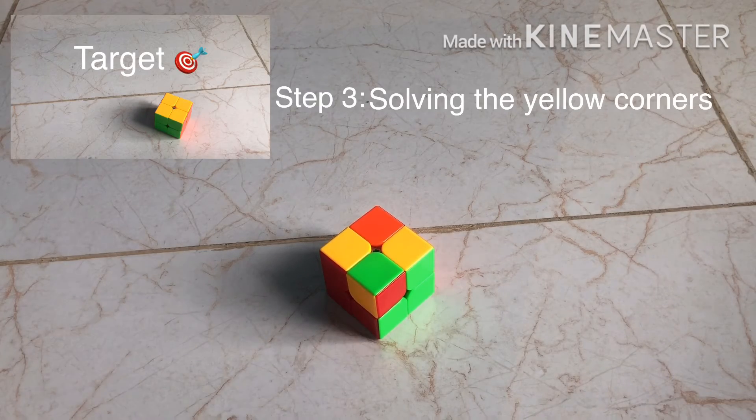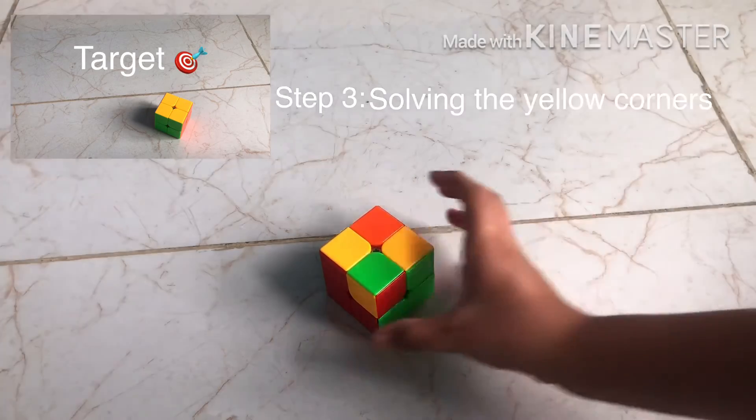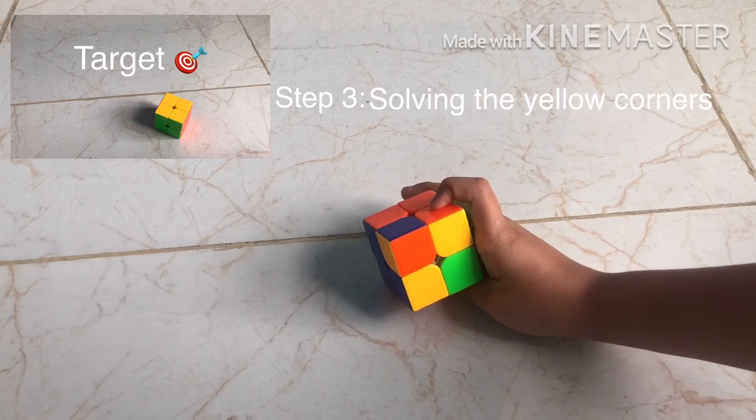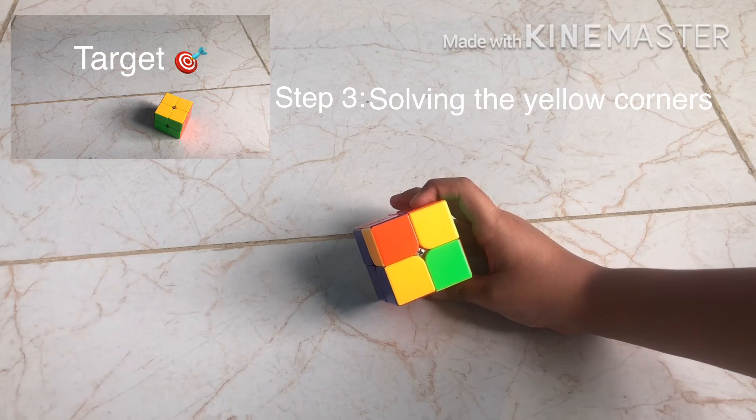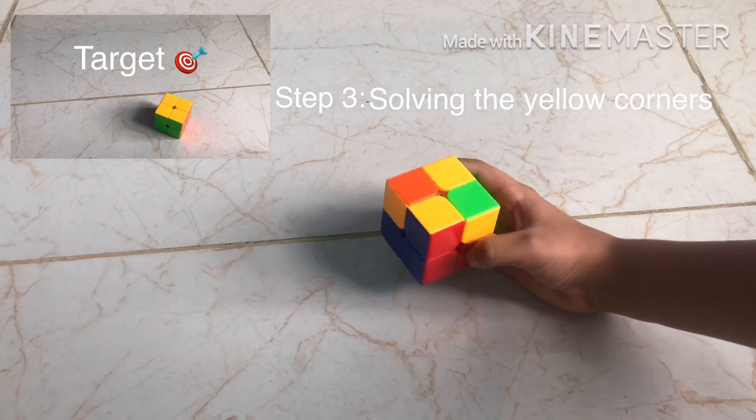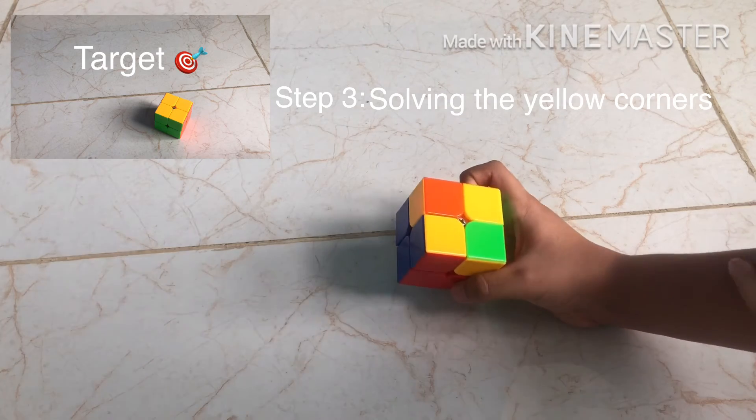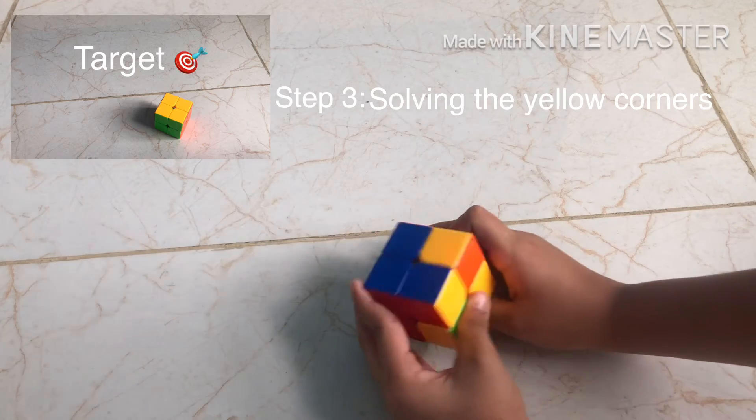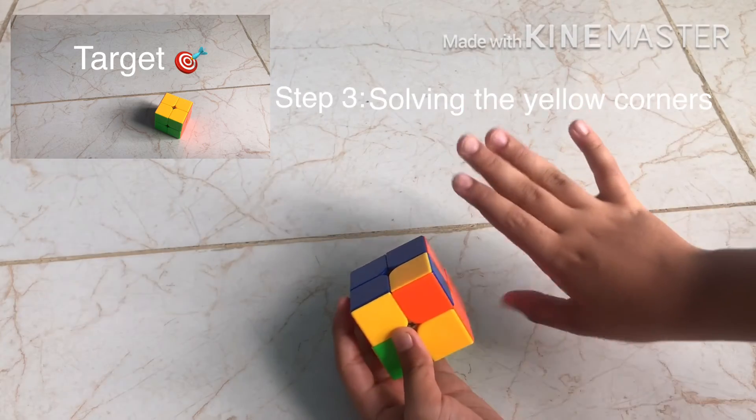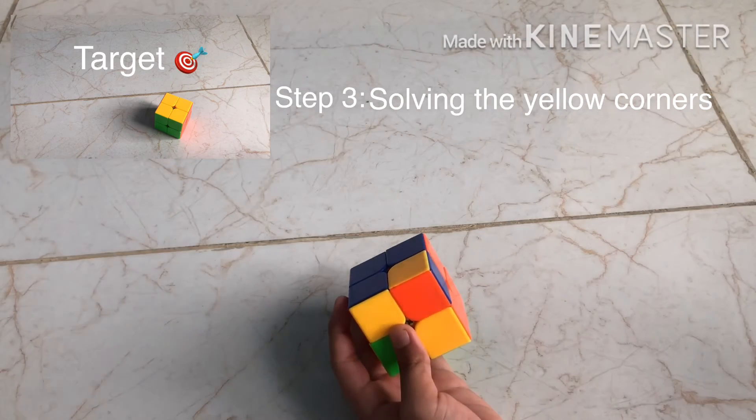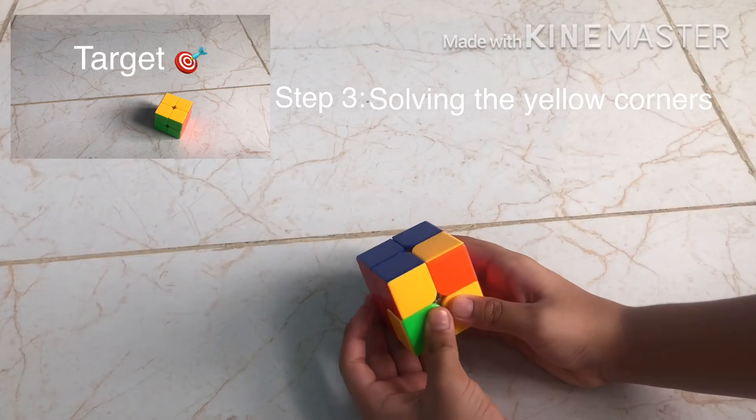And now, the last step. Solving the cube. Rotate the cube so that the yellow face is facing you. And then, find a corner and place it at the place of your right hand. And then, use this algorithm.